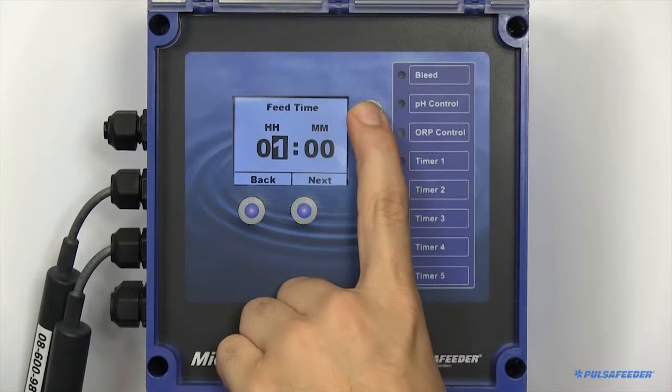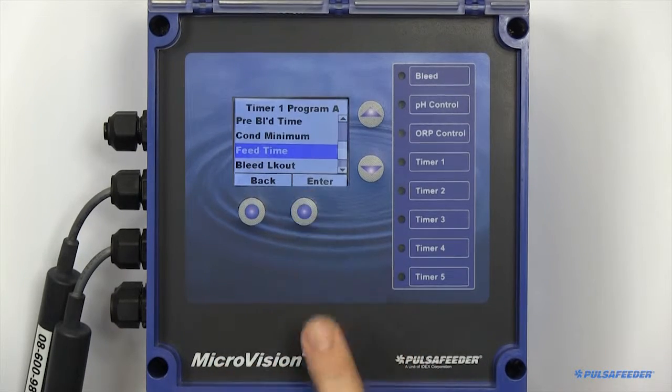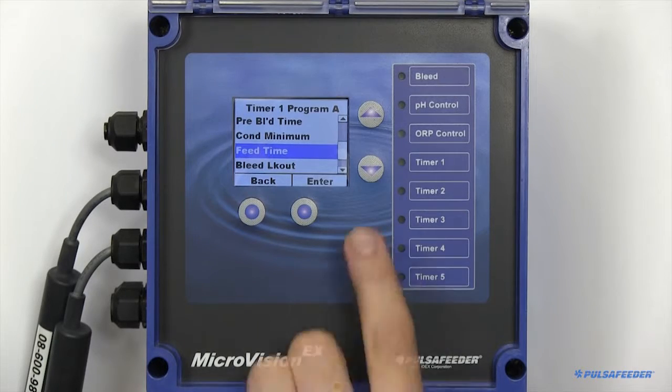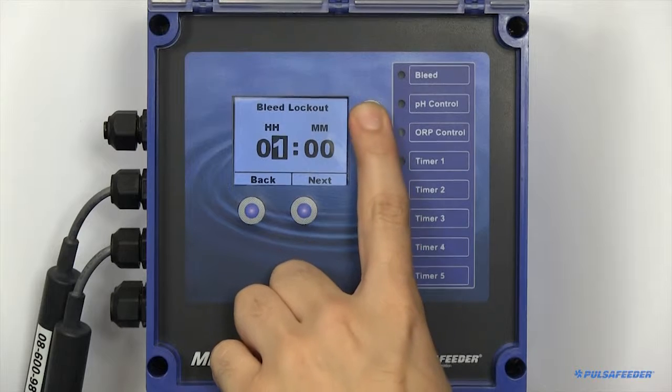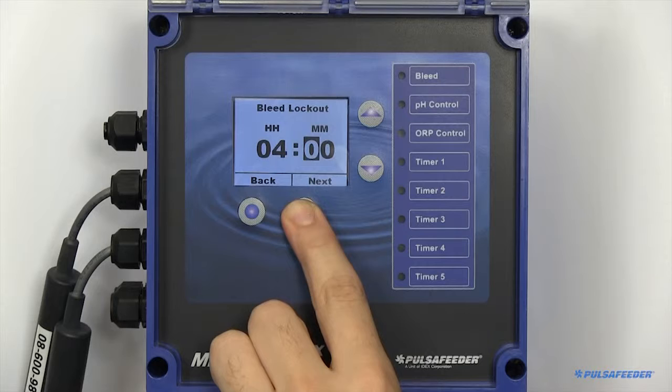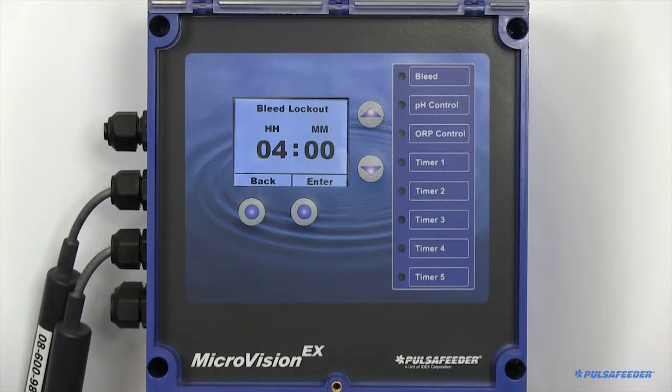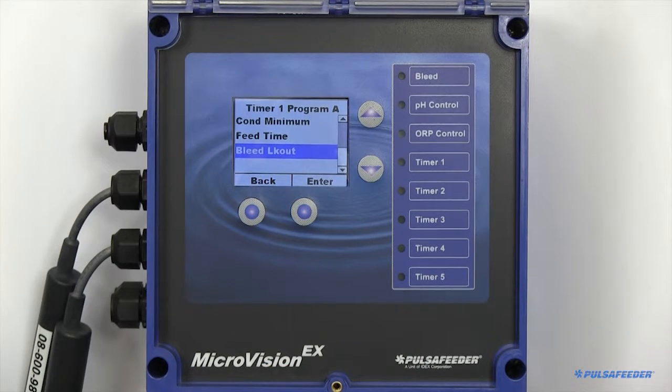Next, specify your feed time, or how long you would like to feed chemical. To prevent your tower from bleeding costly chemicals, you can also set a bleed lockout, or the amount of time you would like to prevent your tower from bleeding water from the system. Note that this timer begins when your feed cycle begins. For the lockout to last longer than your feed time, please specify it as such.